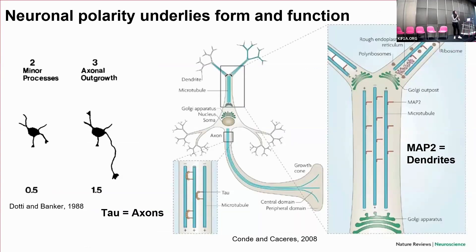Next I'll talk briefly about neuronal polarity. I described earlier the formation of dendrites and axons, and that differential specialization is driven by biochemical factors. Two examples are MAP2 and Tau. MAP2 is segregated to the dendrites of mature neurons and Tau into the axons. Dendrites receive signals from other neurons and axons send out signals from the cell body — this allows for cell communication and proper function of our nervous system.